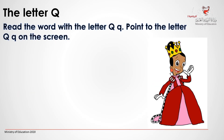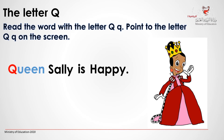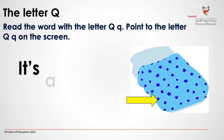Read the word with the letter Q. Point to the letter Q on the screen. Are you ready? Great, let's go. Sally is a happy queen. Point to the letter Q. It's a quilt. Quilt. Point to the letter Q.